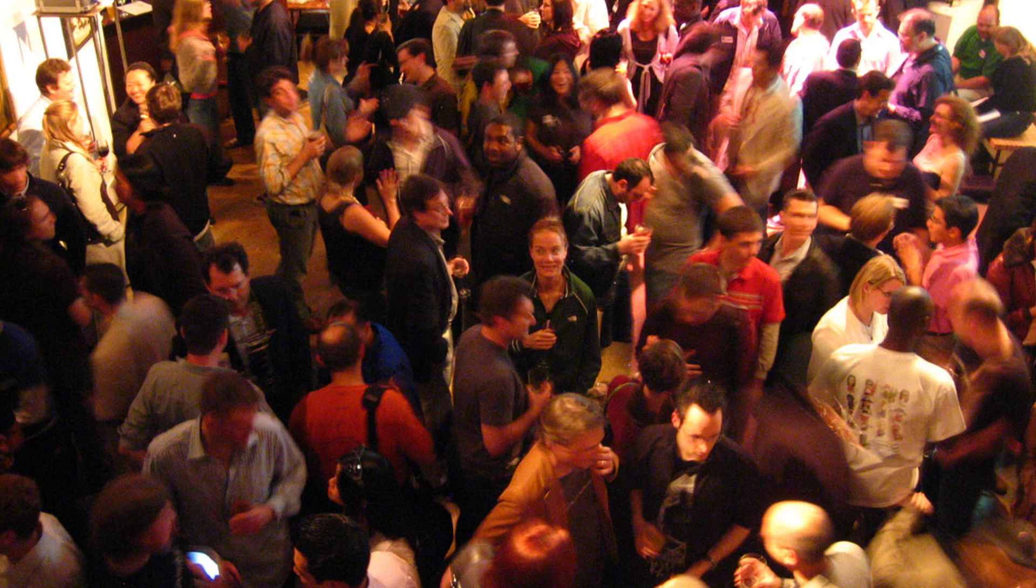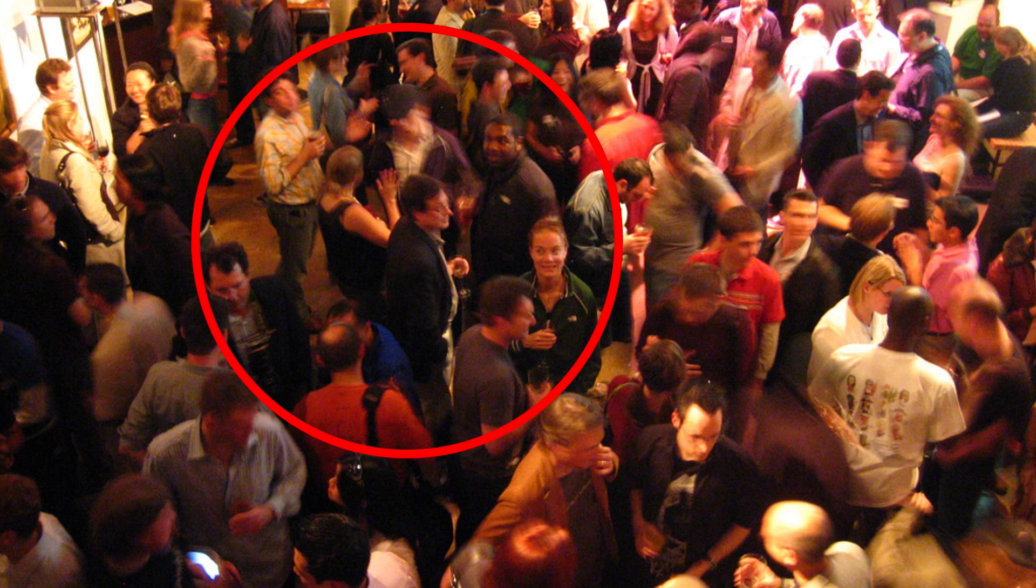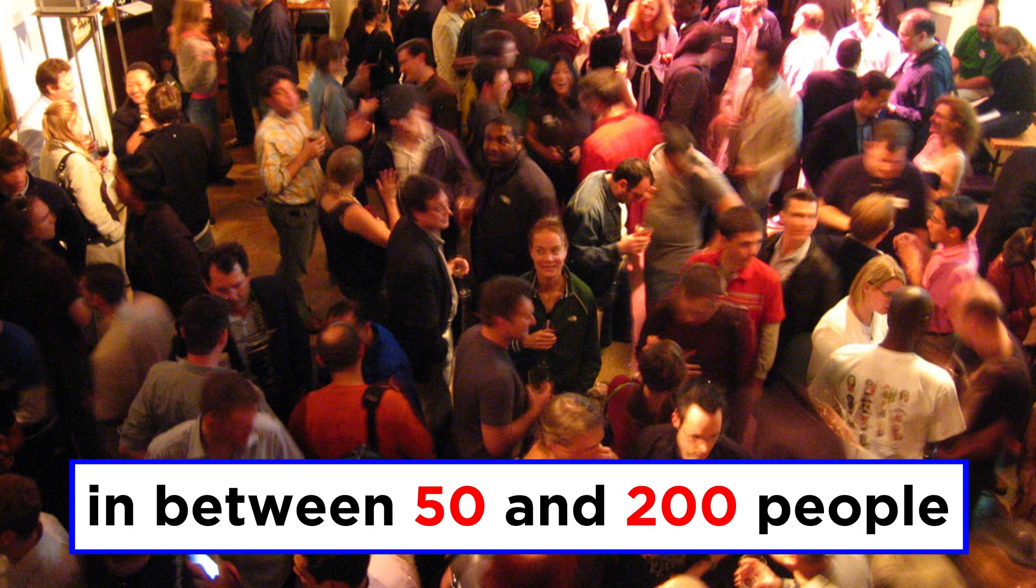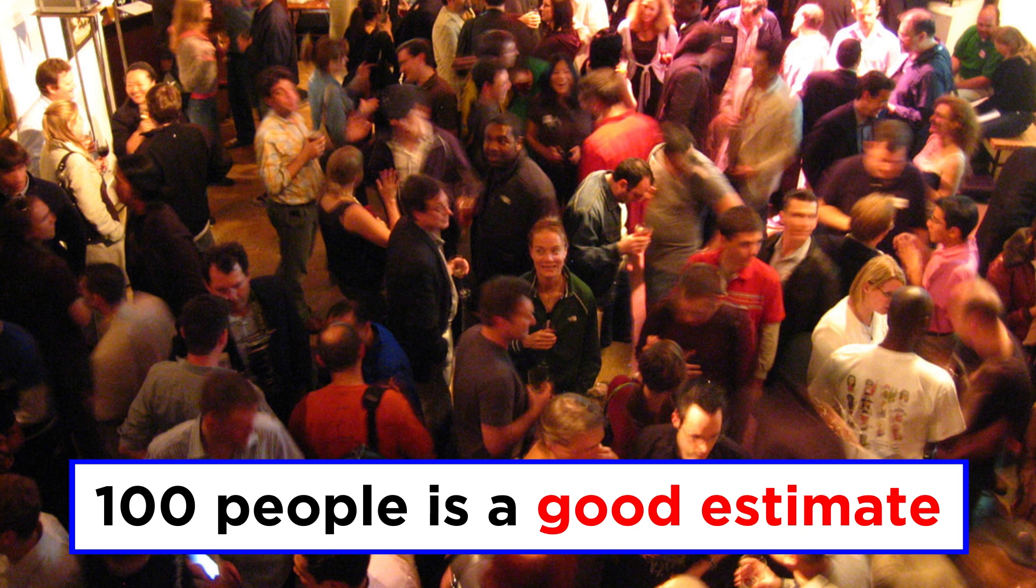We can do the same with the people at the party. We could count by groups of roughly ten and see that it's definitely more than fifty, but nowhere near two hundred, so one hundred becomes a reasonable estimate. The one in the hundreds place is rather certain, while the tens and units places are uncertain.